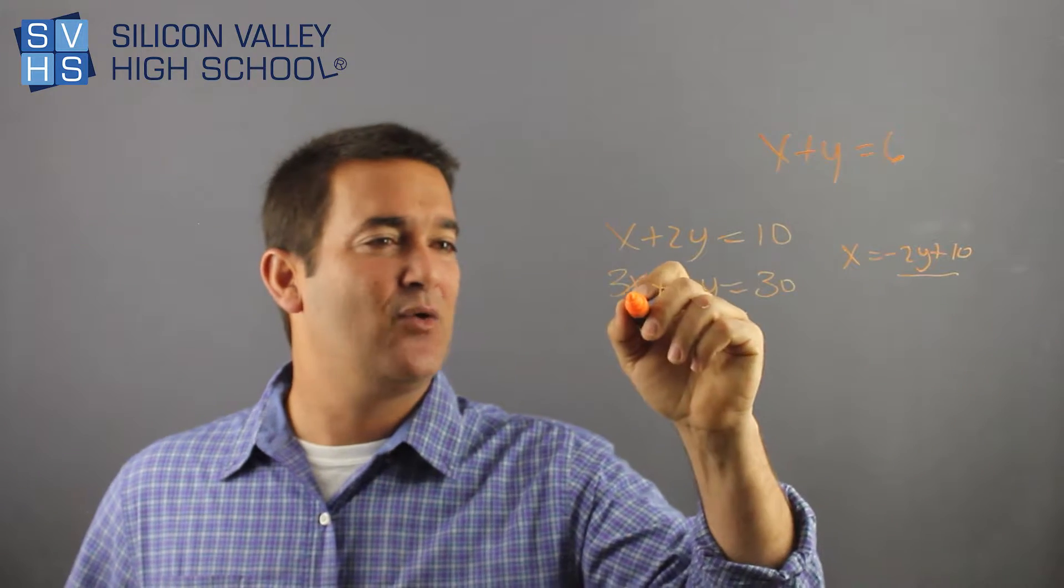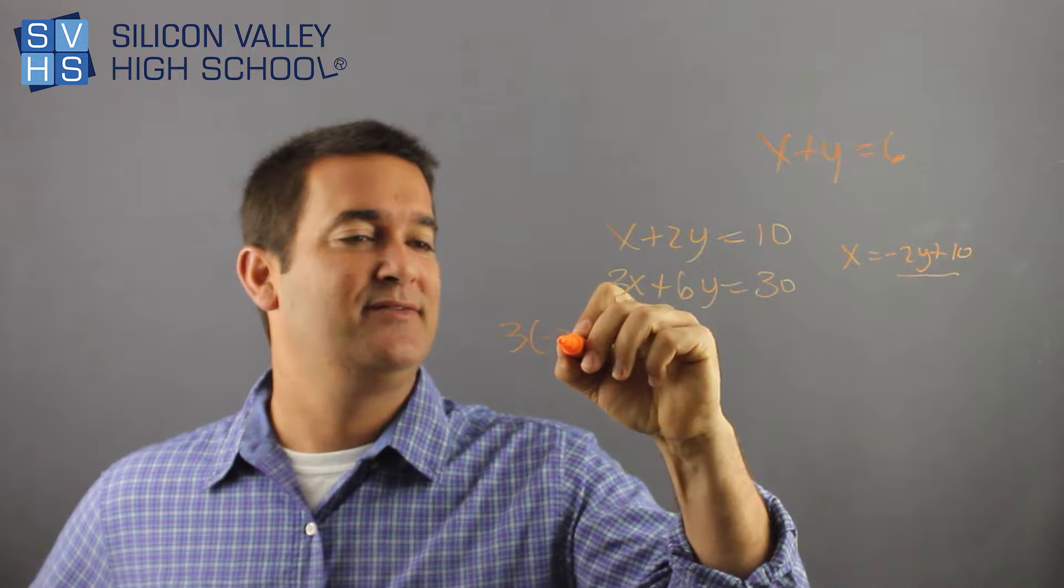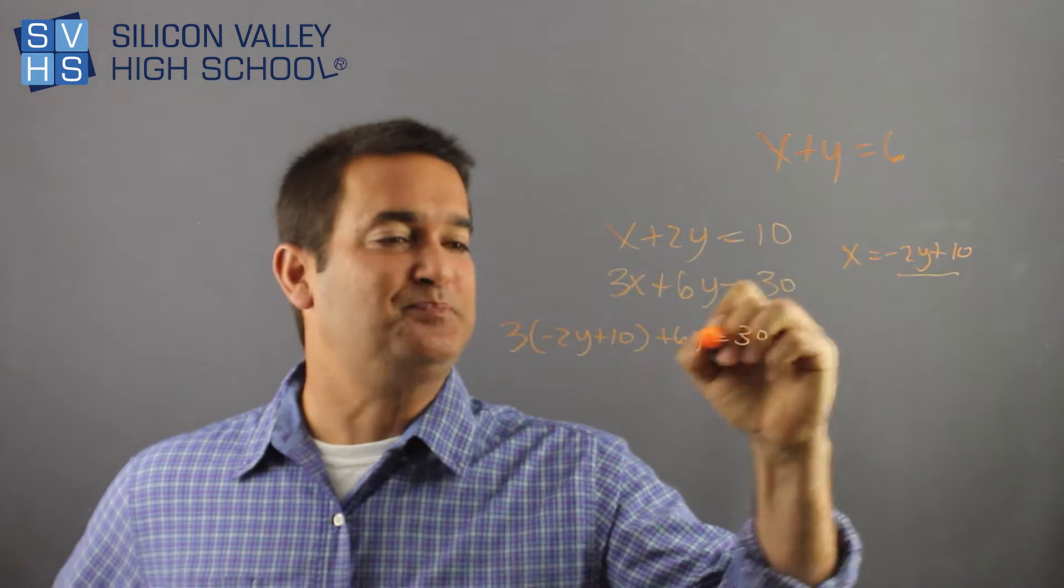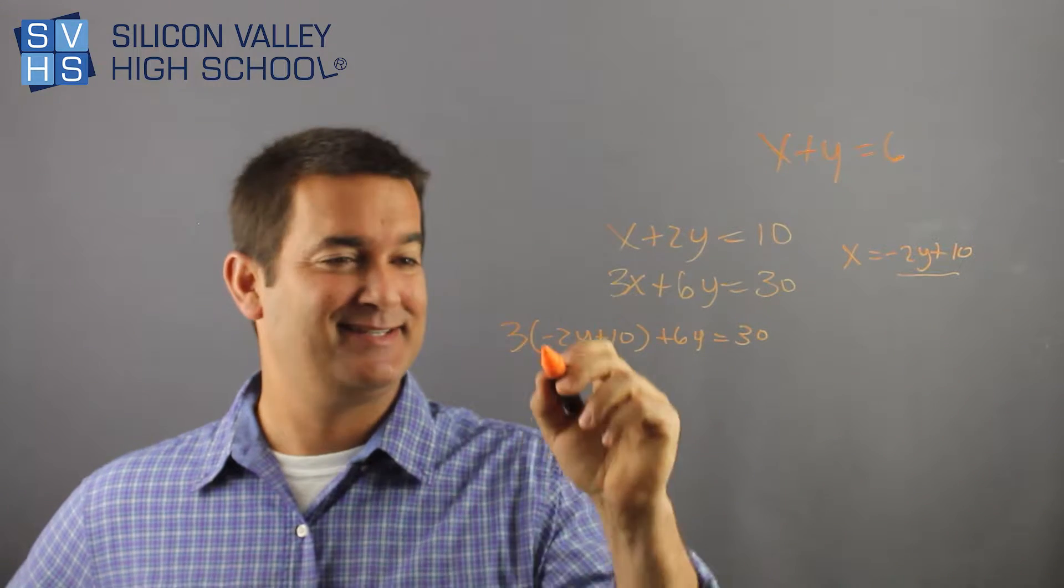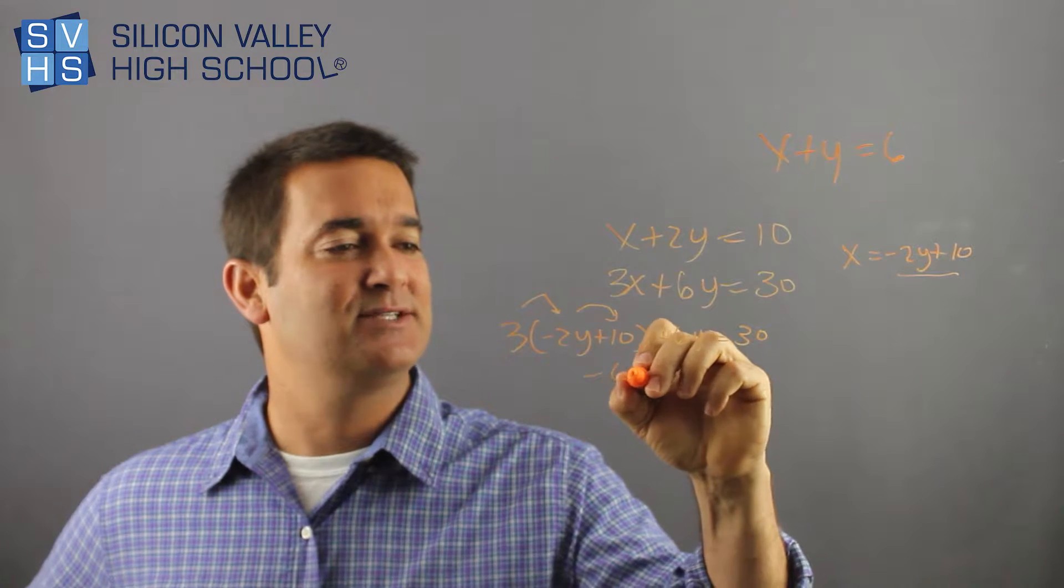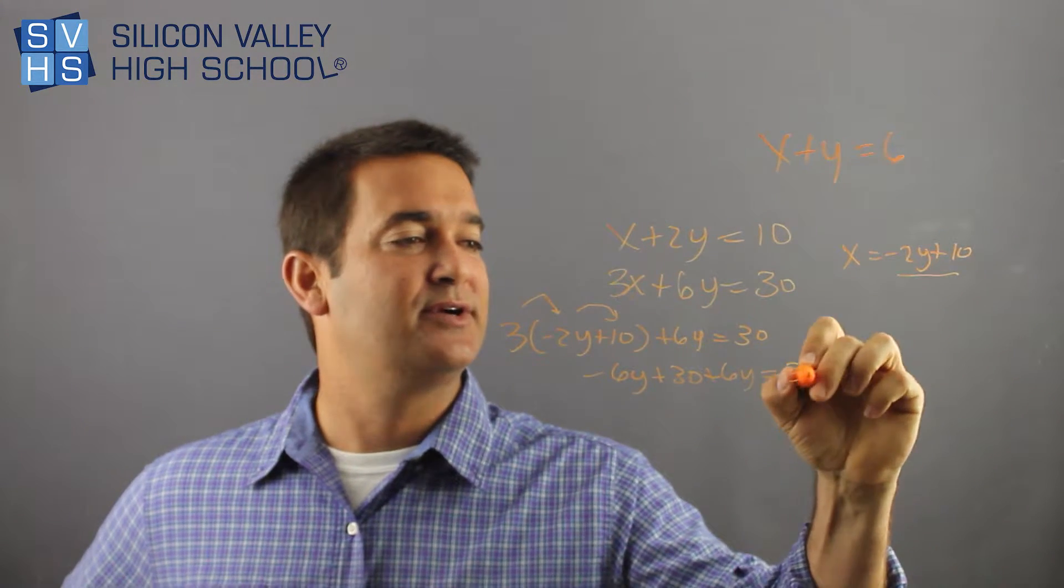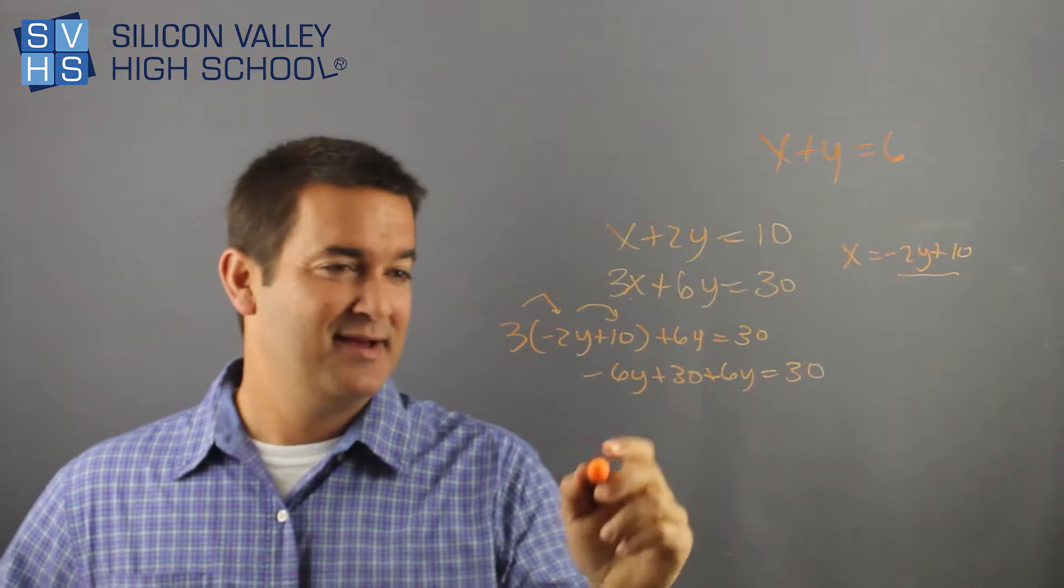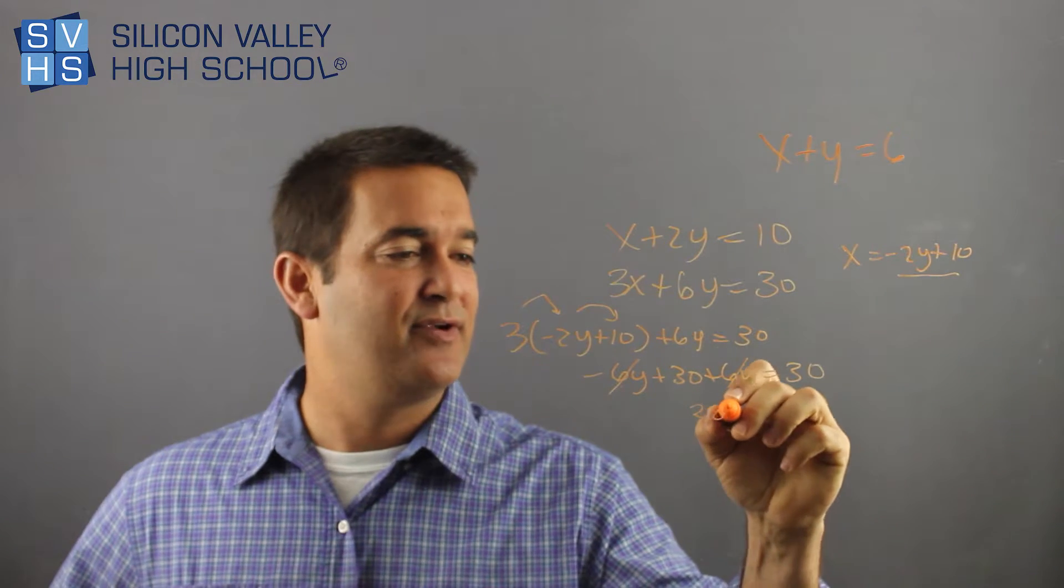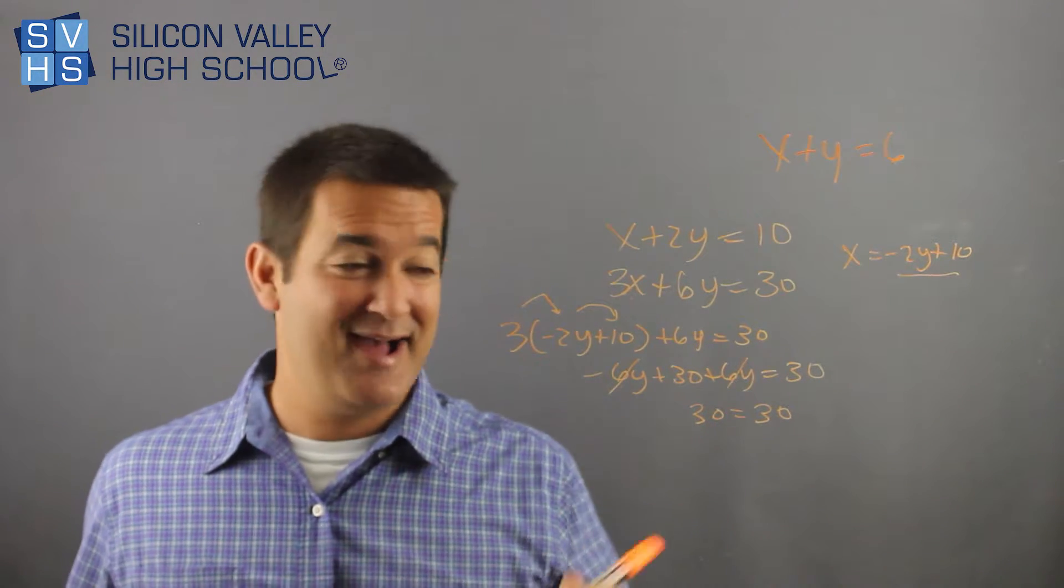X is alone. Now, this is going to go into this guy. So I have 3 parentheses, negative 2y plus 10, plus 6y equals 30. Watch what happens. This is intense. When I distribute my 3 to both guys, I get negative 6y plus 30 plus 6y equals 30. So that looks weird. Combining like terms, these guys disappear and I have 30 equals 30. Like, what? What is my x? What is my y? I have no idea.